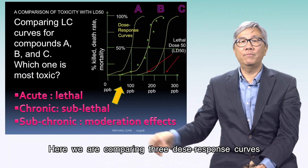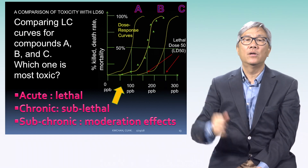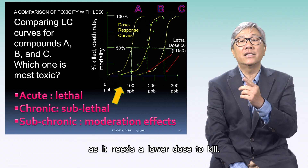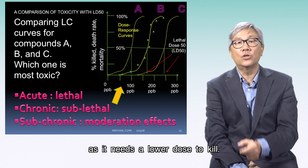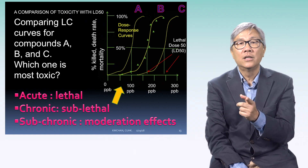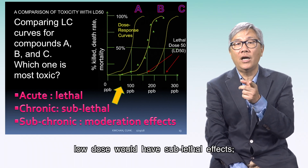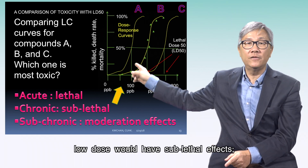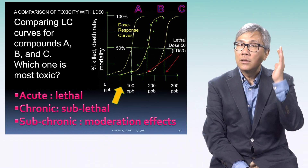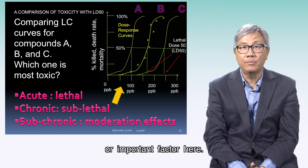Here we are comparing three dose-response curves from compounds A, B, and C. Which one is more toxic? Obviously compound A is more toxic — it needs a lower dose to kill. And if we use a low dose, it does not mean that it is not toxic; high dose would have acute toxic effects, while low dose would have sub-level effects. Using sub-chronic or moderate effects, time is obviously a crucial factor here.